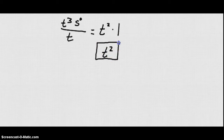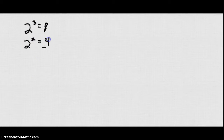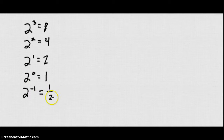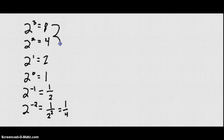Continuing with our pattern: 2 to the third is 8, 2 to the second is 4, 2 to the first is 2, 2 to the zero is 1. Going down another step, you'd expect to divide by 2 again. So 2 to the negative first is 1 over 2 to the first, which is one half. And 2 to the negative second is 1 over 2 squared, or one fourth.